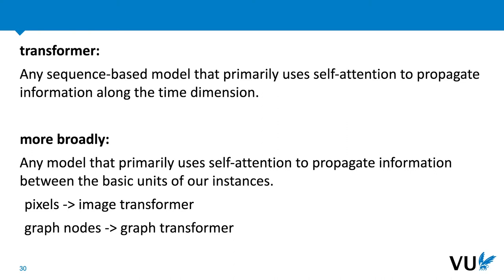pixels; in the case of graphs, graph nodes — that are connected by some structure: in images, the pixel grid; in graph nodes, the topology of the graph. The idea of any transformer is that it's a model that primarily uses self-attention to propagate information between these basic units along the structure we are given — along the pixel grid or along the graph. But for this lecture, we'll limit ourselves to sequence models.